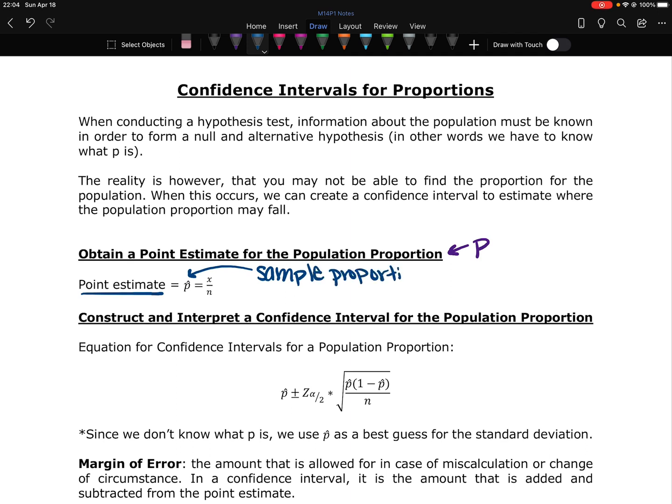And as a reminder, we calculate p hat by taking x, the number of individuals with the characteristic that we're looking at, divided by n, the number of people in our sample size. So all of our confidence intervals are going to start with a point estimate, a sample proportion, and we're going to build an interval around that. An interval is a range of values.